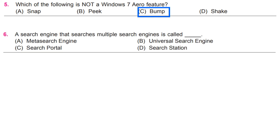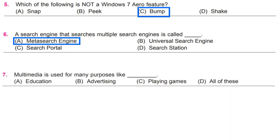A search engine that searches multiple search engines is called A, meta search engine. Multimedia is used for many purposes like D, all of these.